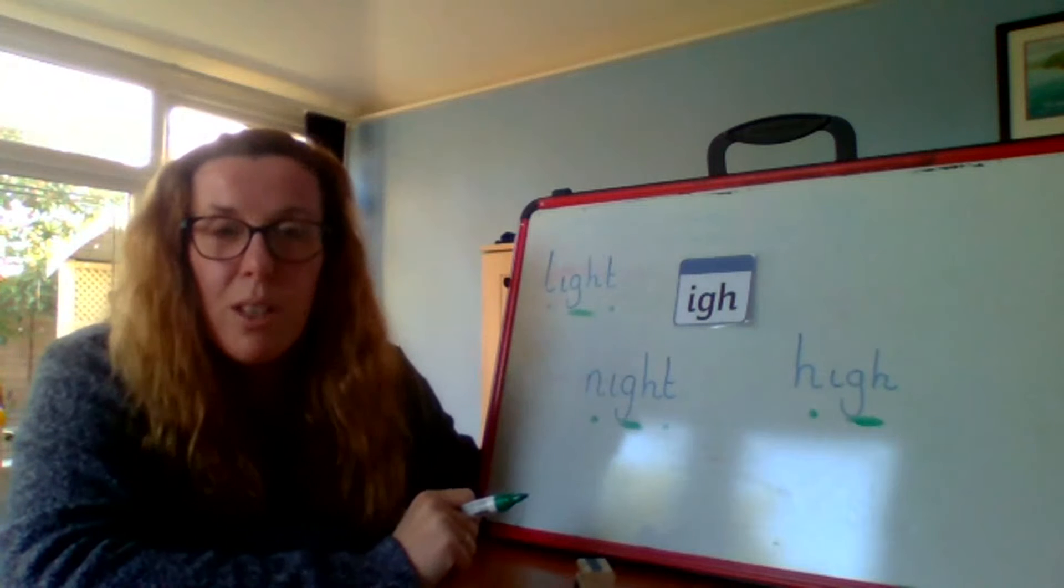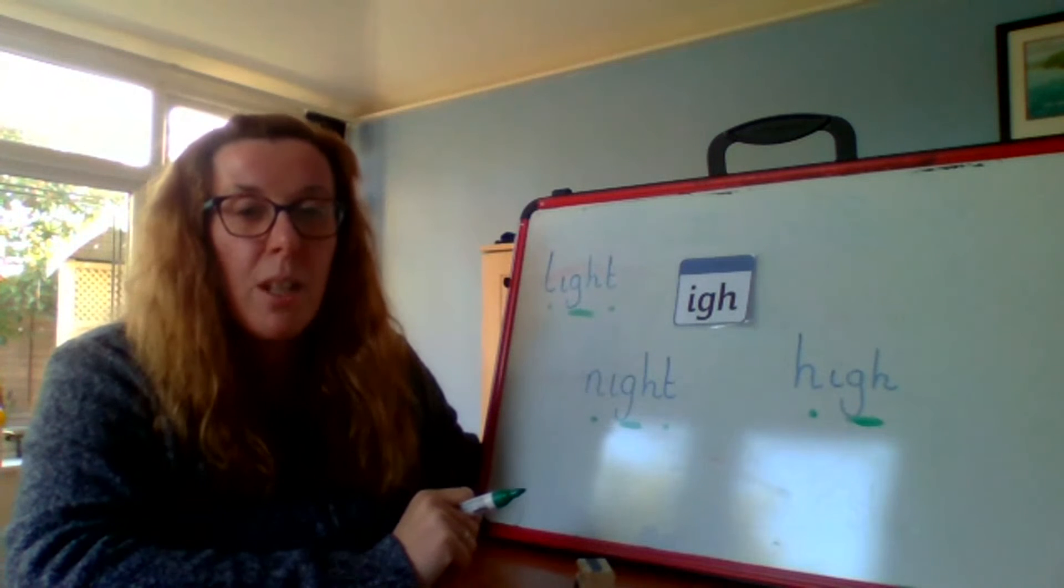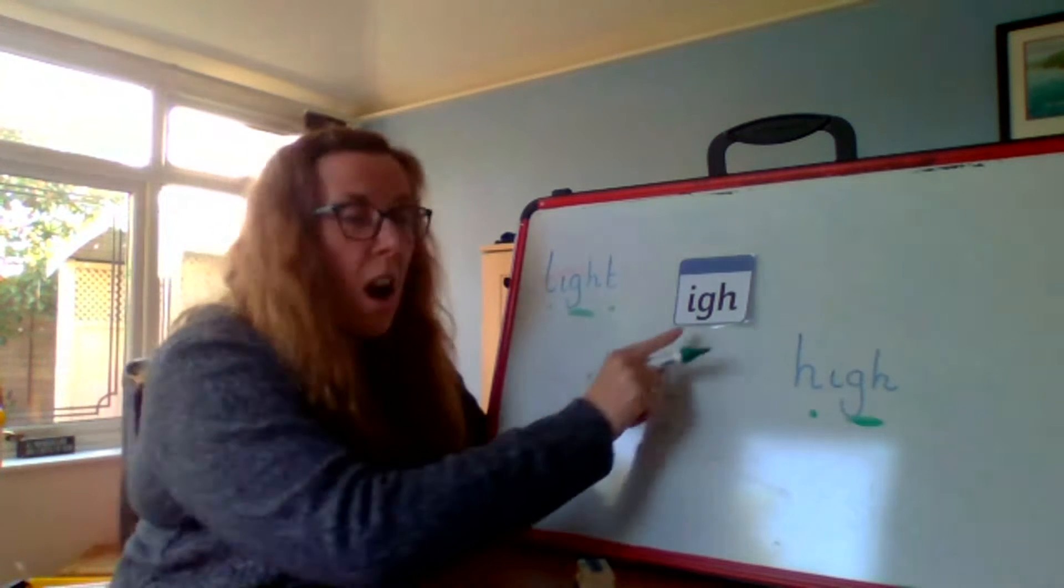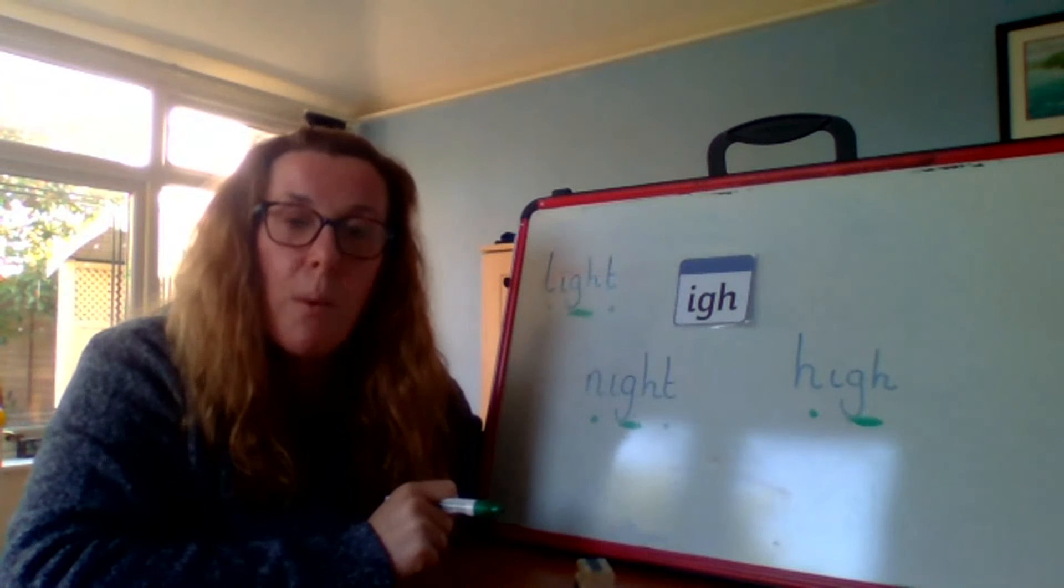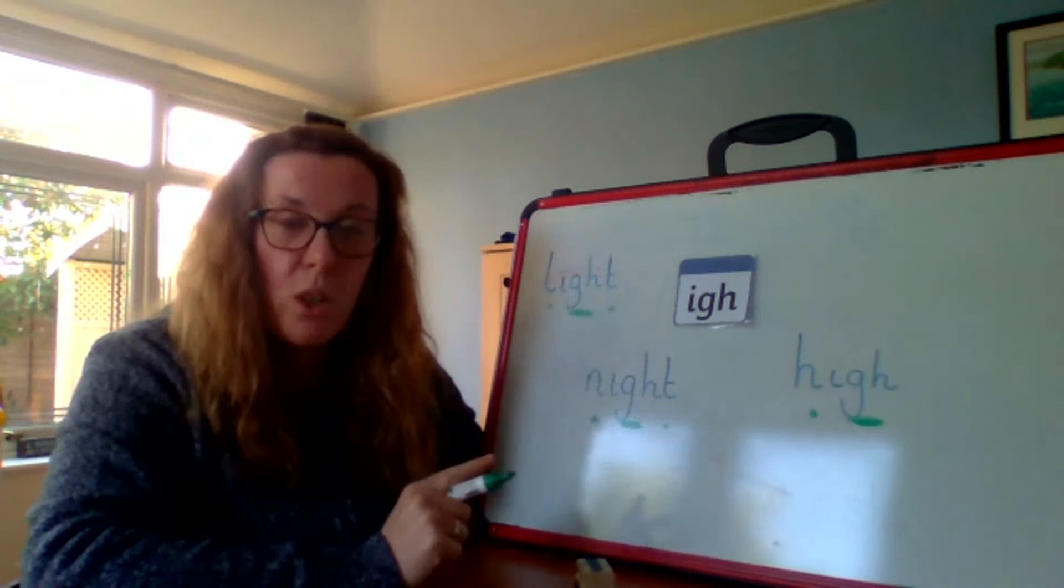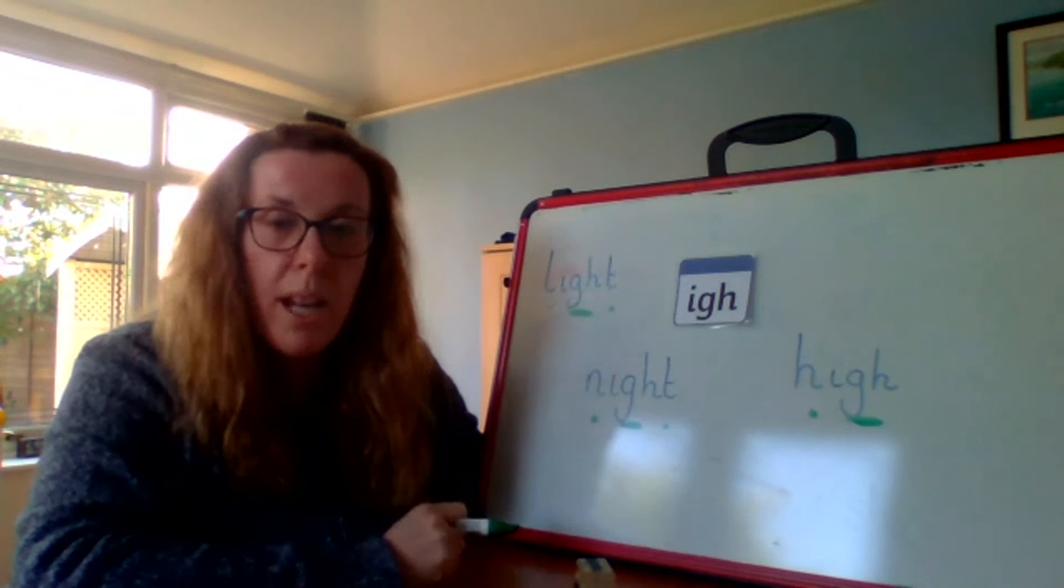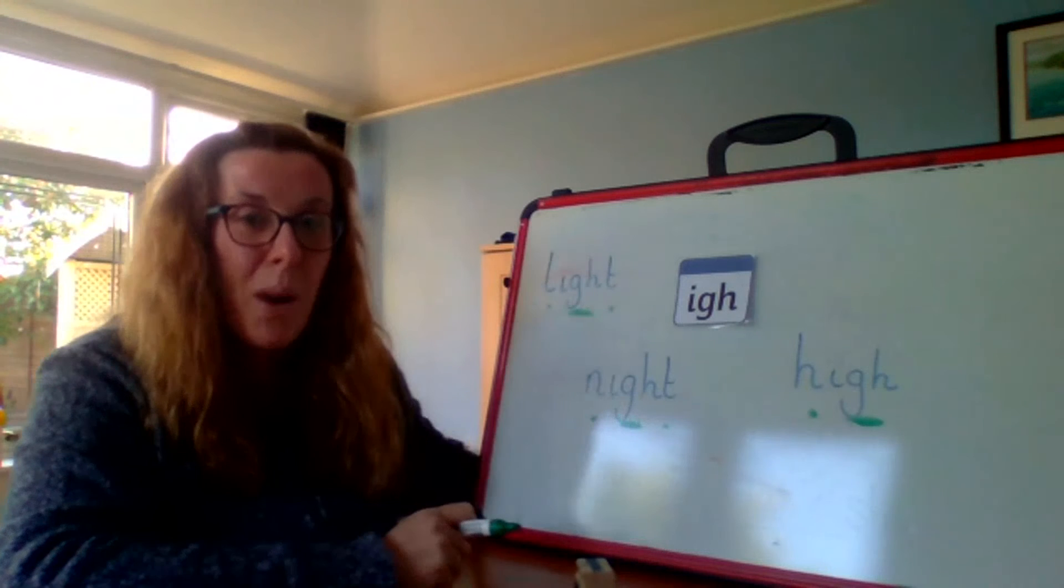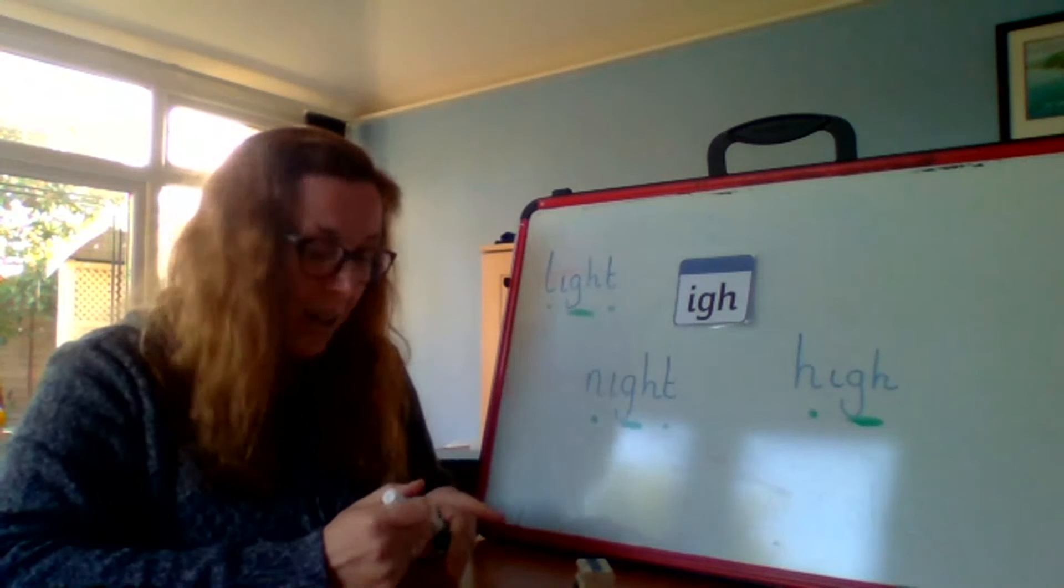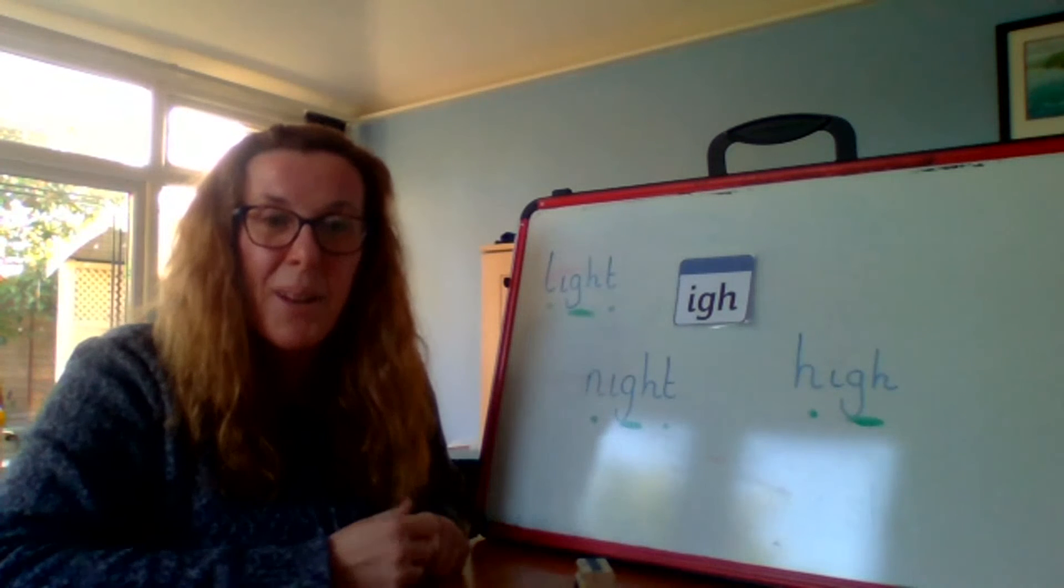What I would love you to do, children, is go and write as many words that you can think of that have the I trigraph in them. And then I would like you to put the sound buttons under each of your words so you can show me that you understand which phonemes you are hearing. Can't wait to see what you do, children. And I'll see you really soon. Take care now. Bye.